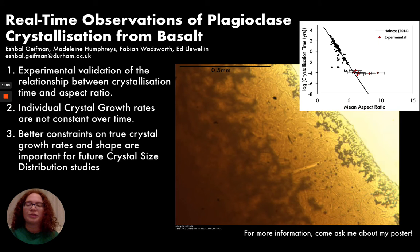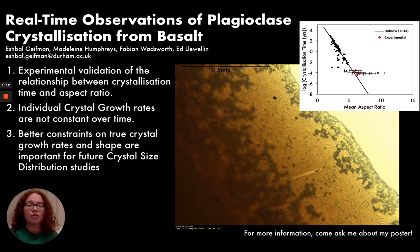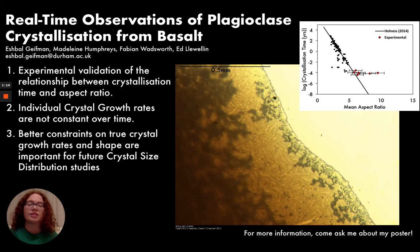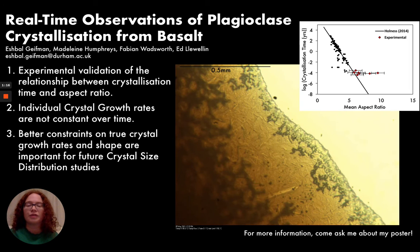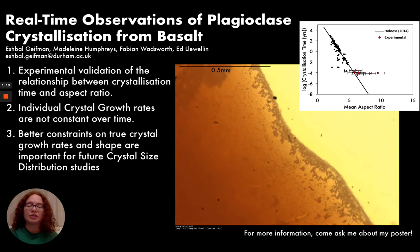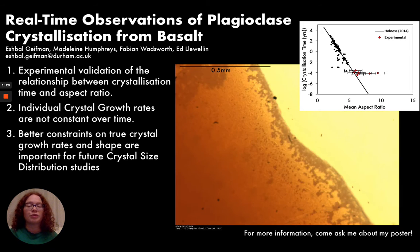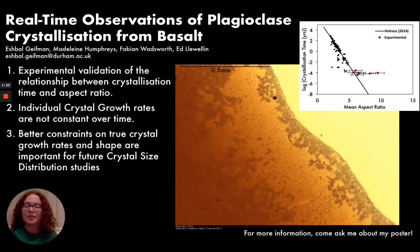The results from observing crystals as they grew also indicate that crystal growth rates are generally not constant over time and slowly start to decay before reaching a halt, often caused by impingement. Many if not all crystals stopped growing before the cooling time was complete and the melt was quenched.